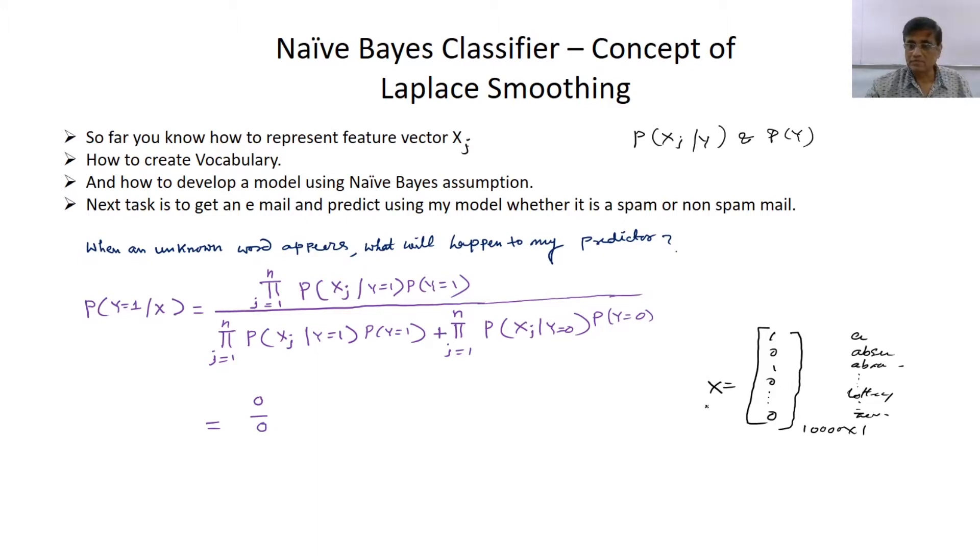Another way of feature representation is called multinomial event model. Both models are used for text classification but multinomial event model is more compact and efficient for text classification. First we are discussing multivariate Bernoulli event model.